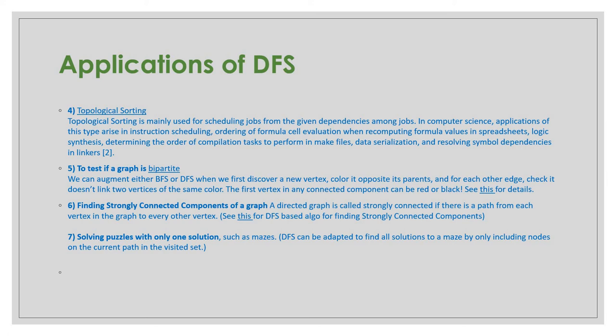Finding strongly connected components of a graph: a directed graph is called strongly connected if there is a path from each vertex in the graph to every other vertex. There is a DFS-based algorithm for finding strongly connected components.